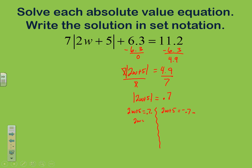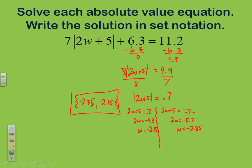Solving the first equation: subtract 5, getting 2w equals negative 4.3, then divide by 2 to get w equals negative 2.15. Solving the second: subtract 5, getting 2w equals negative 5.7, divide by 2 to get w equals negative 2.85. The solution set, smallest number first, is {-2.85, -2.15}.